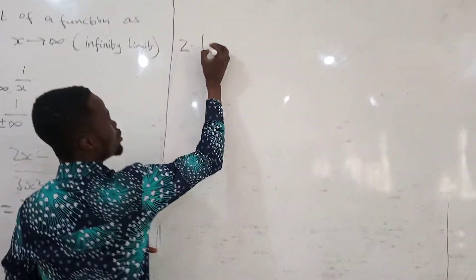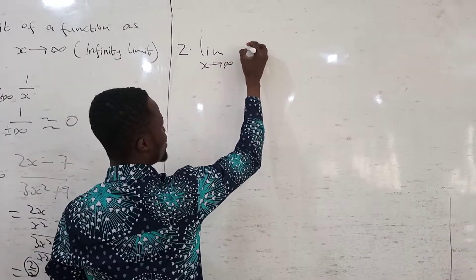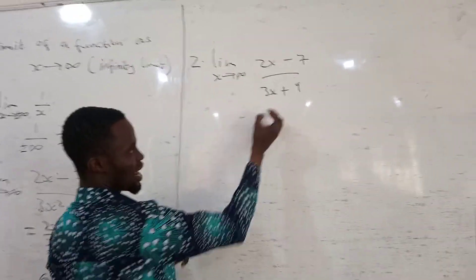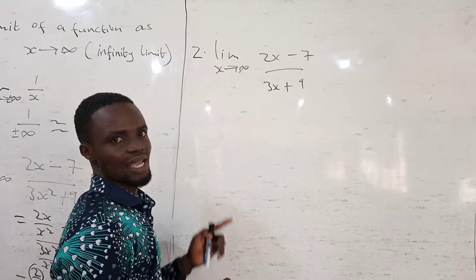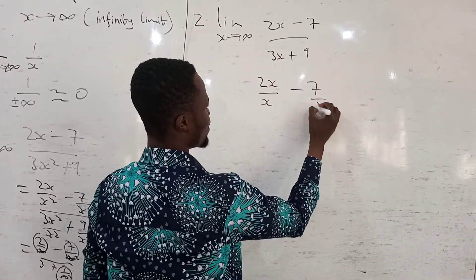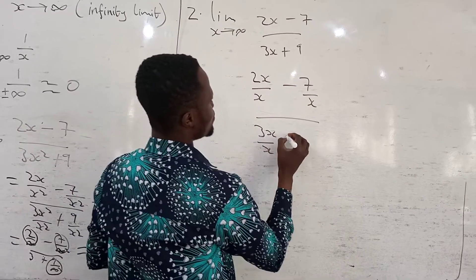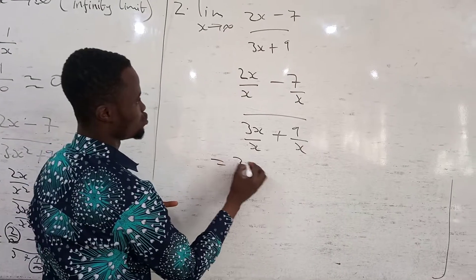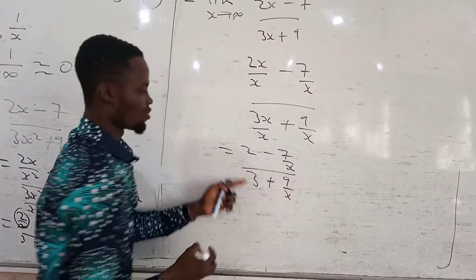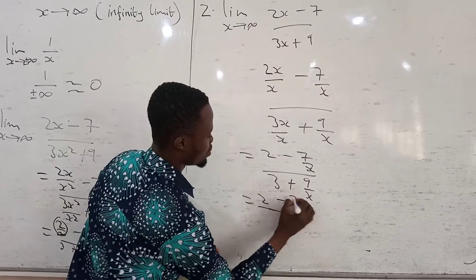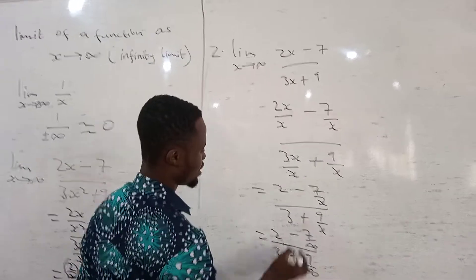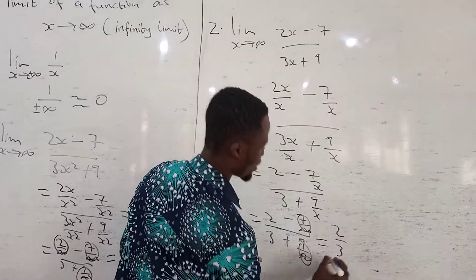For another example, suppose we have the limit as x goes to infinity of 2x minus 7, all divided by 3x plus 9. The highest exponent here is just x, so we divide all terms by x. We get 2x over x, minus 7 over x, all divided by 3x over x, plus 9 over x. This simplifies to 2 minus 7 over x, all divided by 3 plus 9 over x. Putting in infinity, 7 over infinity and 9 over infinity both go to 0, giving us 2 over 3 as the answer.